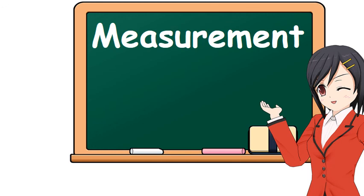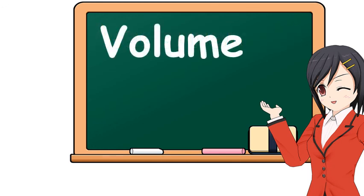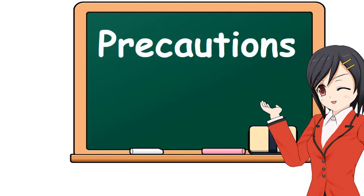That's it for this lesson. As a quick recap: we covered the main apparatus used for measurement, especially for length, time, and mass — there are more tools we'll meet along the way, such as spring balances, lenses, and ammeters. We also discussed measuring volumes of both regular and irregular objects in detail, and finally looked at common errors and precautions. I hope you liked this video, thank you for watching.